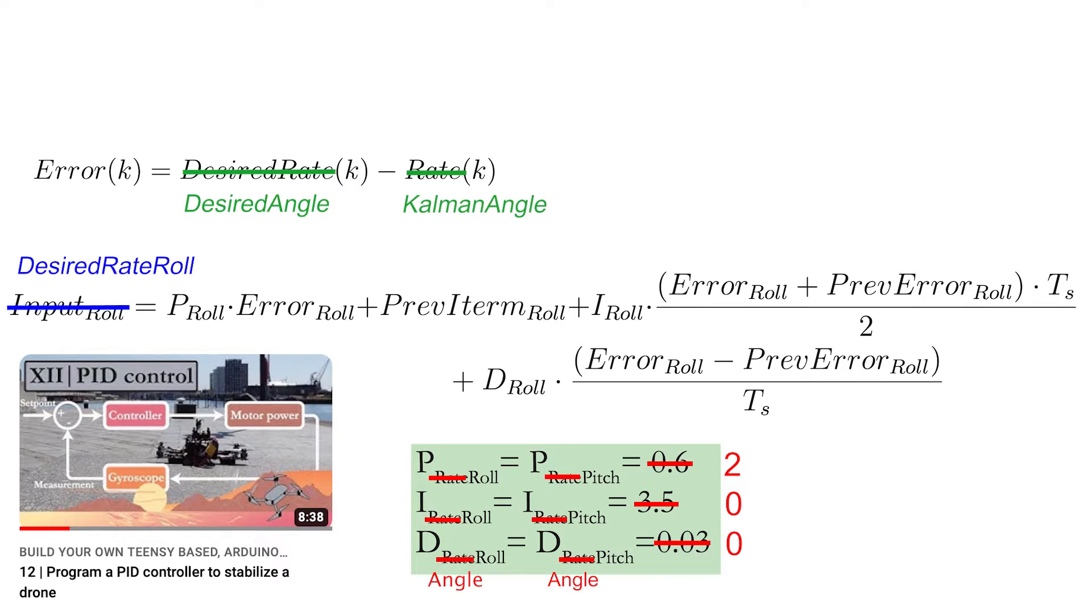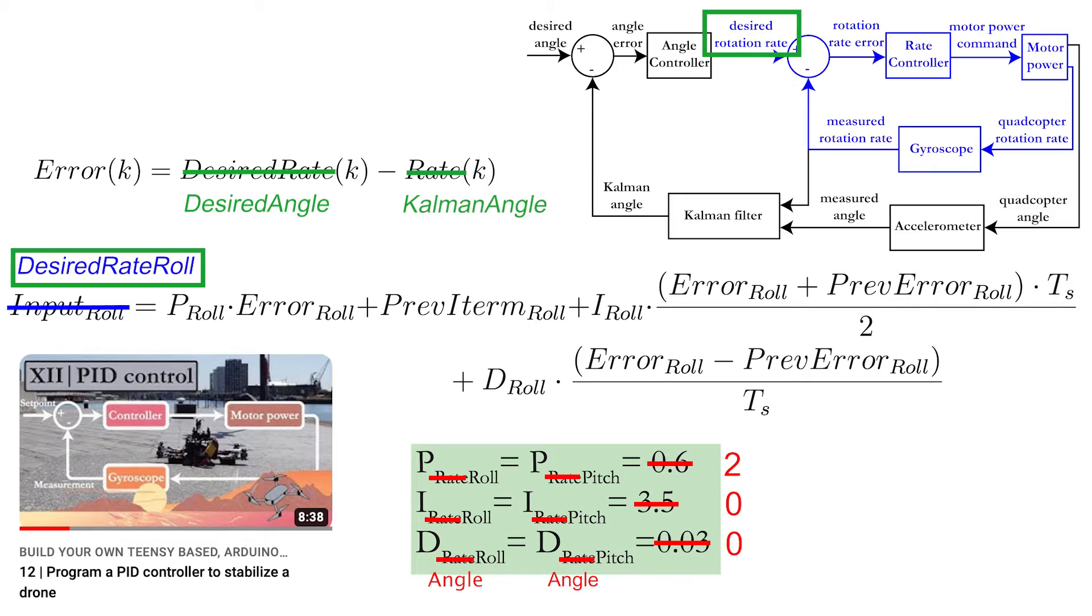Last but not least, the output of our angle controller is not the input for the motor, but the input for the inner loop controller and thus the desired rotation rate. And that's it. With these very simple modifications, you are able to code a two-loop angle mode flight controller.